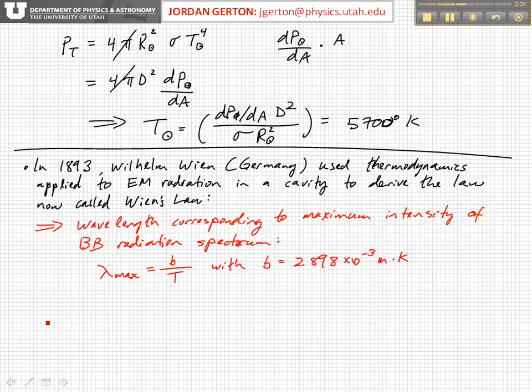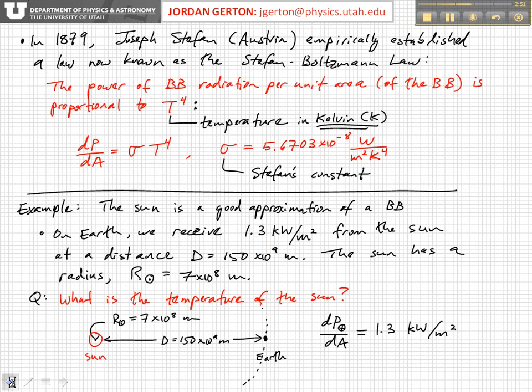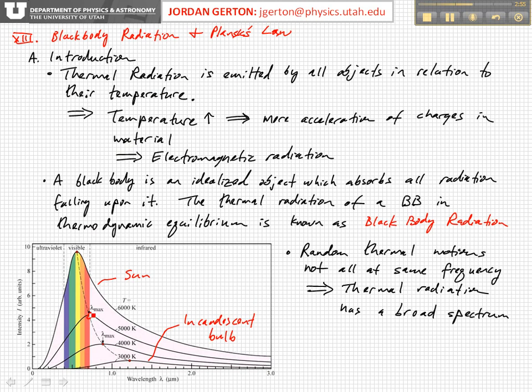And so using thermodynamics, Wien was able to predict that the wavelength corresponding to the maximum intensity of the black body spectrum, that is, these wavelengths here, is proportional to one over the temperature.